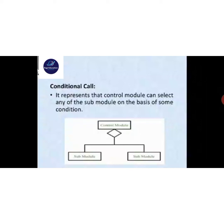Conditional call represents that a control module can select any submodule on the basis of some conditions. The picture shows a control module with a diamond module below it, branching into two submodules. The diamond box is a conditional module that represents control selecting any submodule based on conditions.